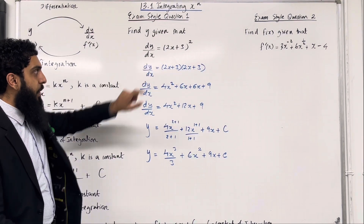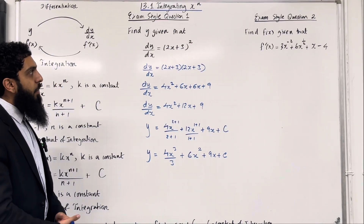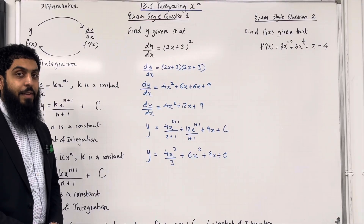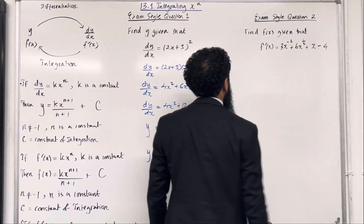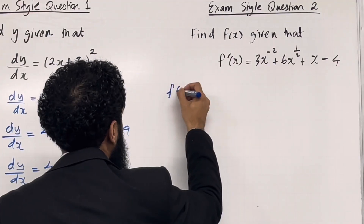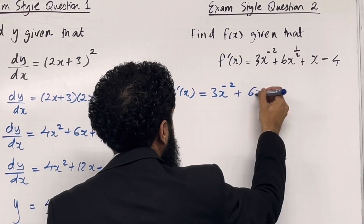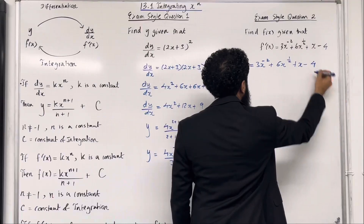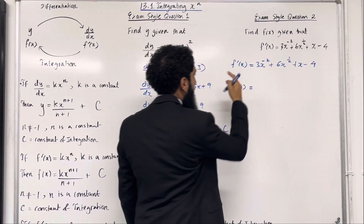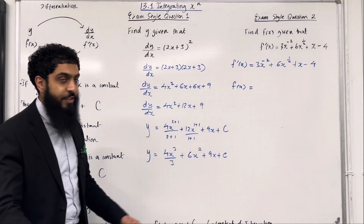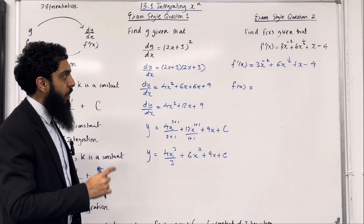So when dy/dx equals (2x + 3)², y equals that polynomial. Moving on to exam style question 2: find f(x) given that f'(x) equals 3x^(−2) + 6x^(1/2) + x − 4. To work out f(x), we need to integrate f'(x) — in other words, integrate this polynomial. We're going to do term-by-term integration.